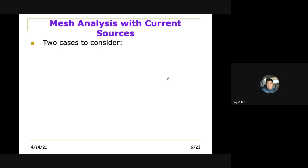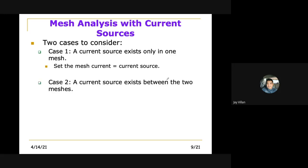What are those two cases? First, when a current source exists only in one mesh, then we set the mesh current equal to that current source. That is if they are in the same direction. The mesh current that you assume has the same direction with your current source. But if they have opposite directions, then negative yung value ng mesh current. Negative ng current source.